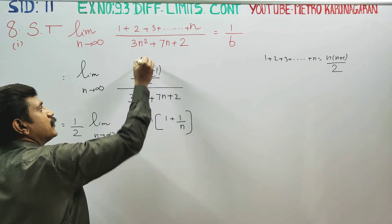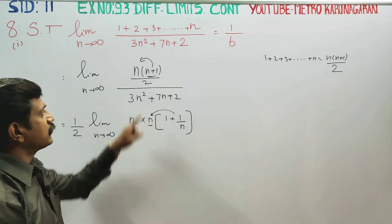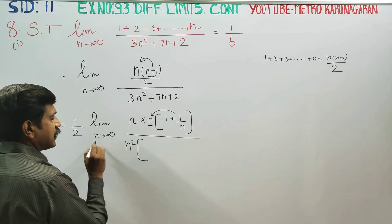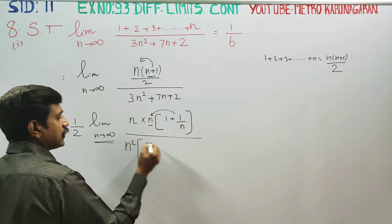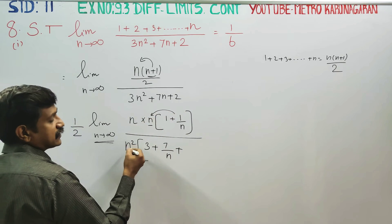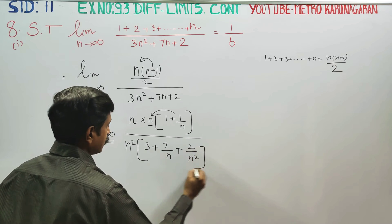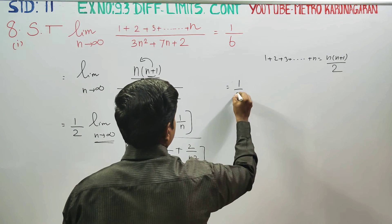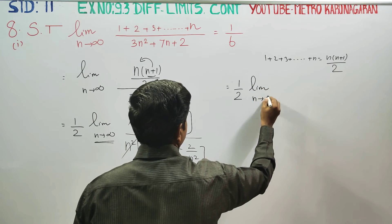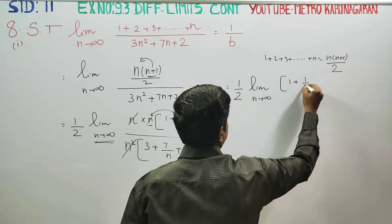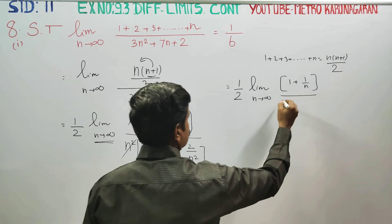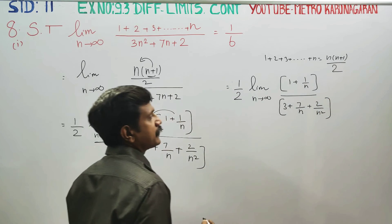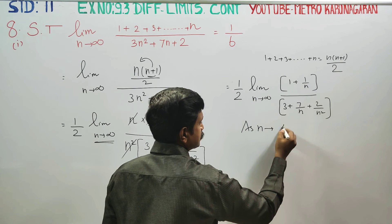This is one n — the main one. Taking n square common, as n turns to infinity, n square common in the numerator and denominator: balance is n square, then 3n plus 7 by n plus 2 by n square. n into n is n square, n square cancels. Final: limit n turns to infinity, numerator 1 plus 1 by n, denominator 3 plus 7 by n plus 2 by n square.